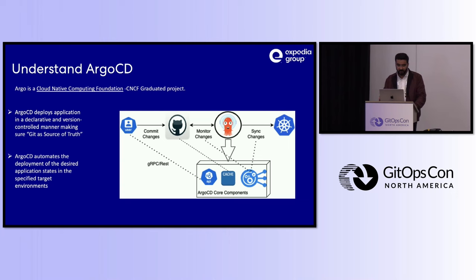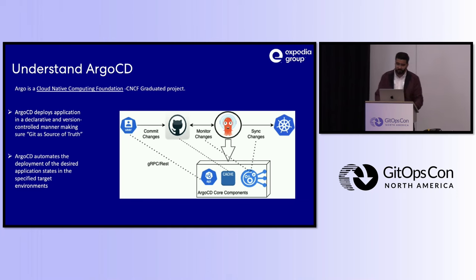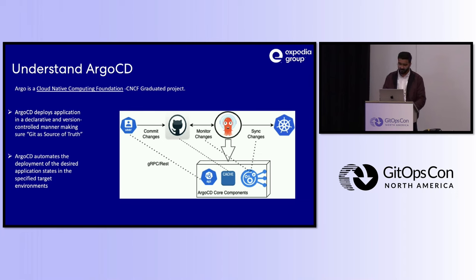Argo CD has three core components: the API server, which provides CLI, UI, gRPC and REST API access to users; the repository server, which acts as a cache of the GitHub manifests to manage Kubernetes manifests; and the controller, which monitors changes via hooks and ensures those changes are synced to the Kubernetes cluster.